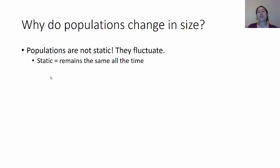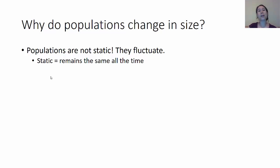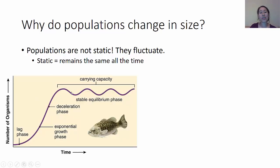The main question that Chapter 53 is seeking to address is: why do populations change in size? Populations are made of living things, so living things die, they are born, they move around. Because of that, populations are not static — static means something remains exactly the same over time. Instead, we say they fluctuate, meaning going up and down, not being totally constant.